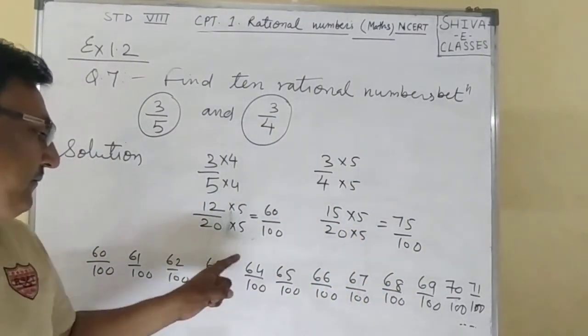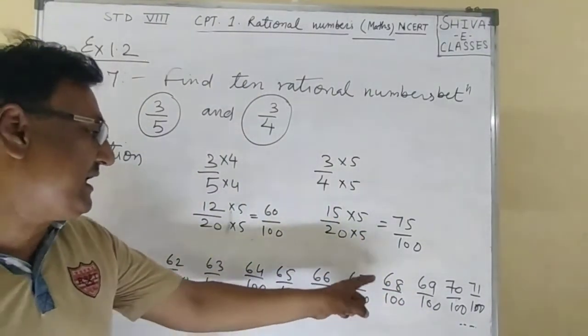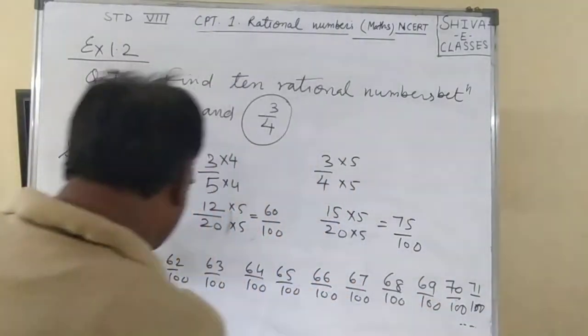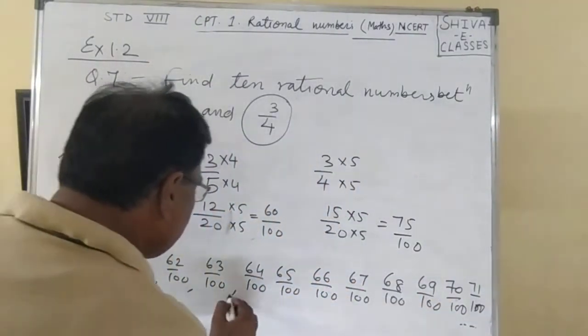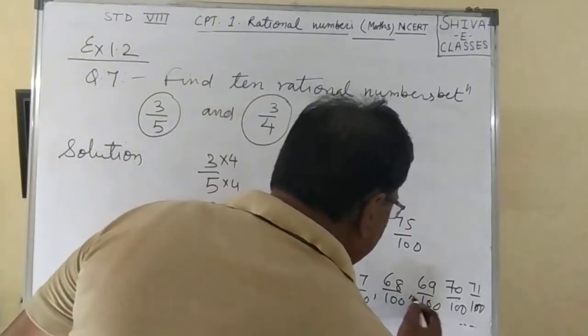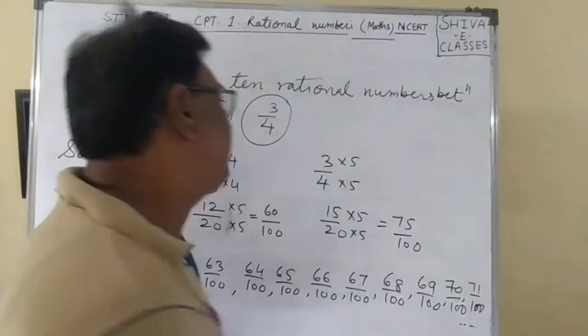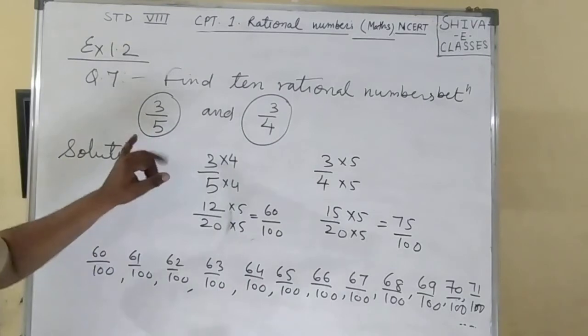1, 2, 3, 4, 5, 6, 7, 8, 9, 10 - these are the 10 rational numbers we found.